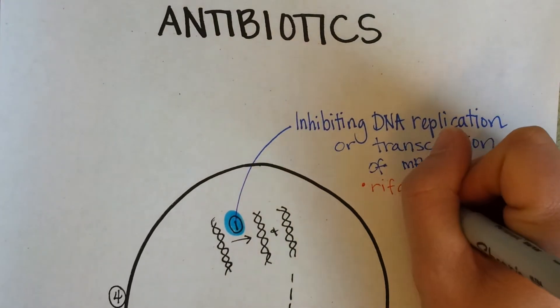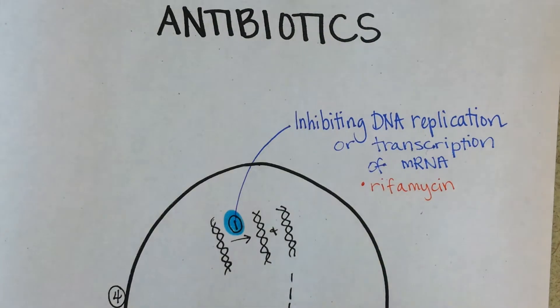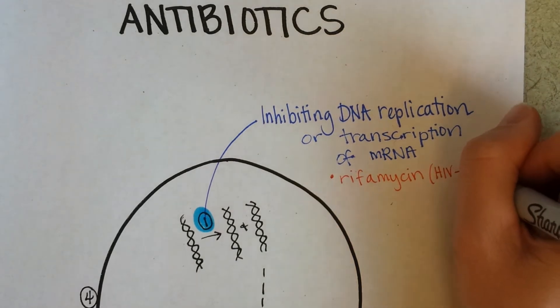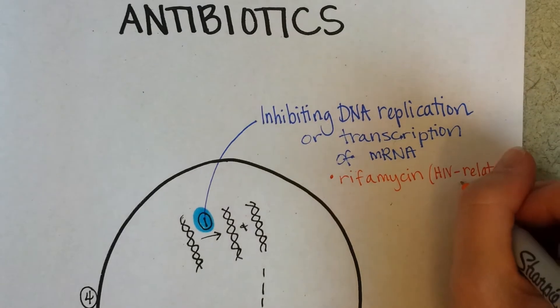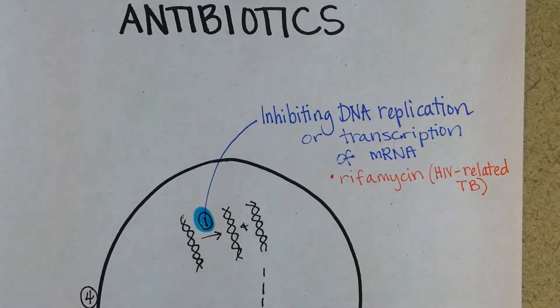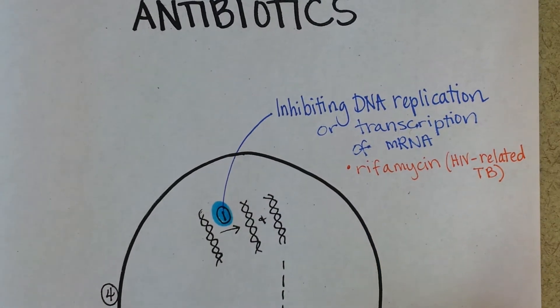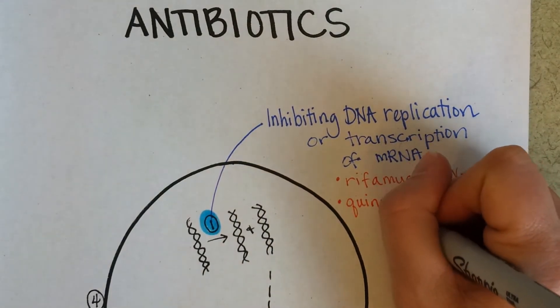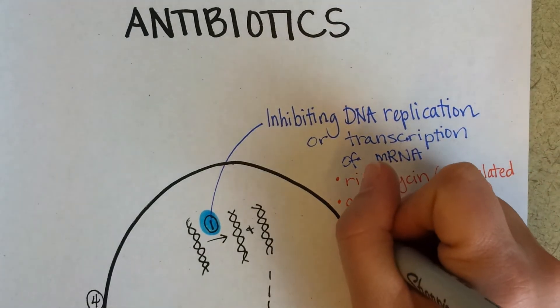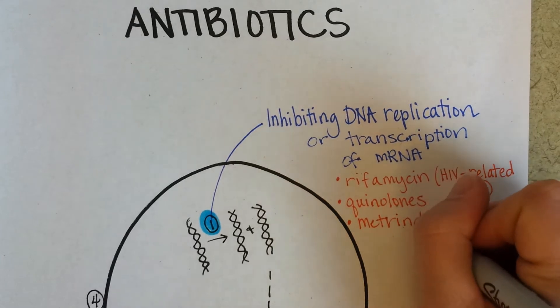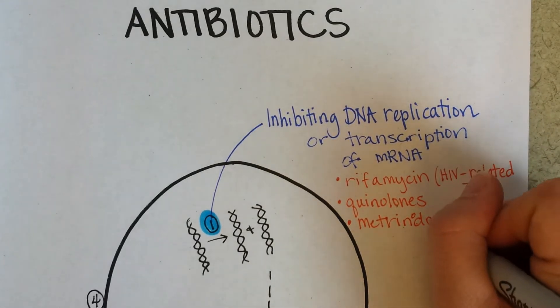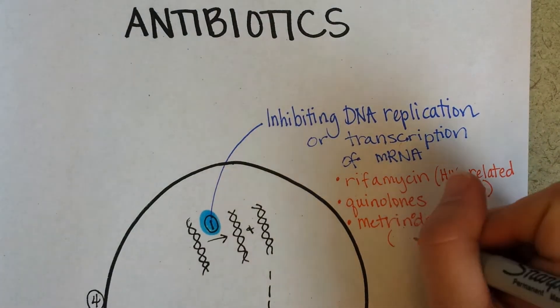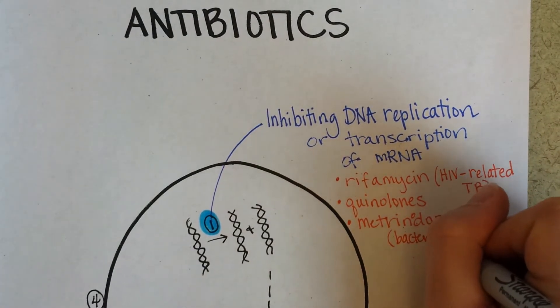And a couple of antibiotics I'll give you examples of that work that way: one is called rifamycin, and I believe that this antibiotic is prescribed for HIV-related tuberculosis. So someone that's already immunocompromised with HIV and then contracts tuberculosis might be given this pretty high-powered antibiotic. And then quinolones work in this way, and metronidazole, and this is an antibiotic that's given, for example, for bacterial vaginosis.